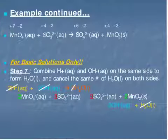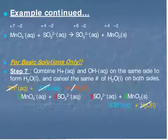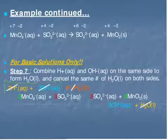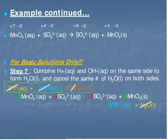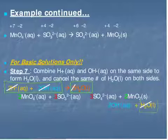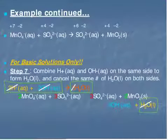The last step is to simplify and cancel out any waters present on both sides. We have 2 H⁺ and 2 OH⁻ on the reactant side; hydrogen and hydroxide combine to form 2 waters. Because we have 2 waters on the reactant side and 1 water on the product side, one water cancels out, leaving only 1 water on the left-hand side.